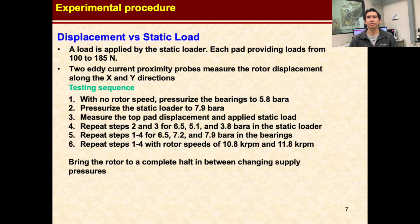Our last step was to determine the stiffness of the rotor bearing system by applying a downward force on the rotor and using eddy current sensors to measure the rotor's displacement. We started by pressurizing the bearings to 5.8 bar, then pressurized the static loader to 7.9 bar where we recorded the rotor displacement and applied load. Next, we increased the static loader pressure and again recorded the rotor displacement and applied load. We repeated this for static loader pressures of 6.5, 5.1, and 3.8 bar to build the stiffness curve. The entire process was then repeated for bearing supply pressures of 6.5, 7.2, and 7.9 bar and for rotor speeds of 0, 10.8, and 11.8 krpm.